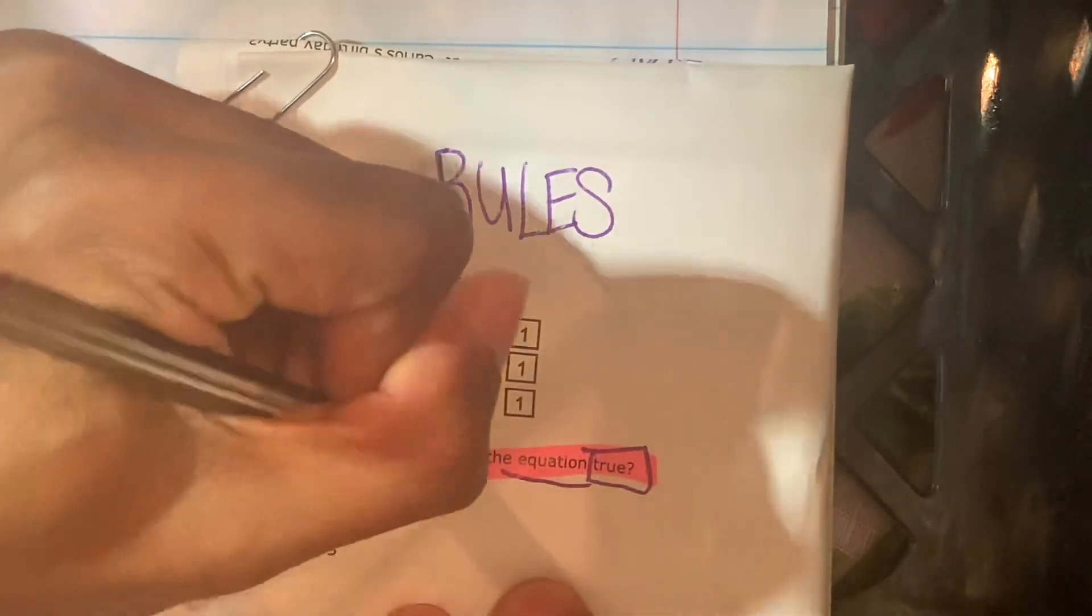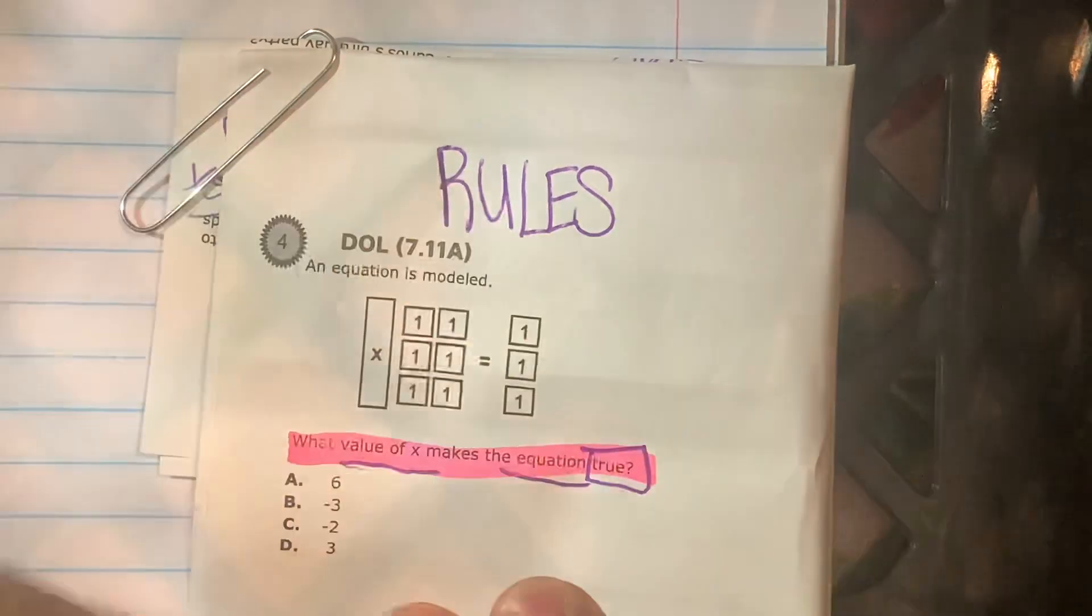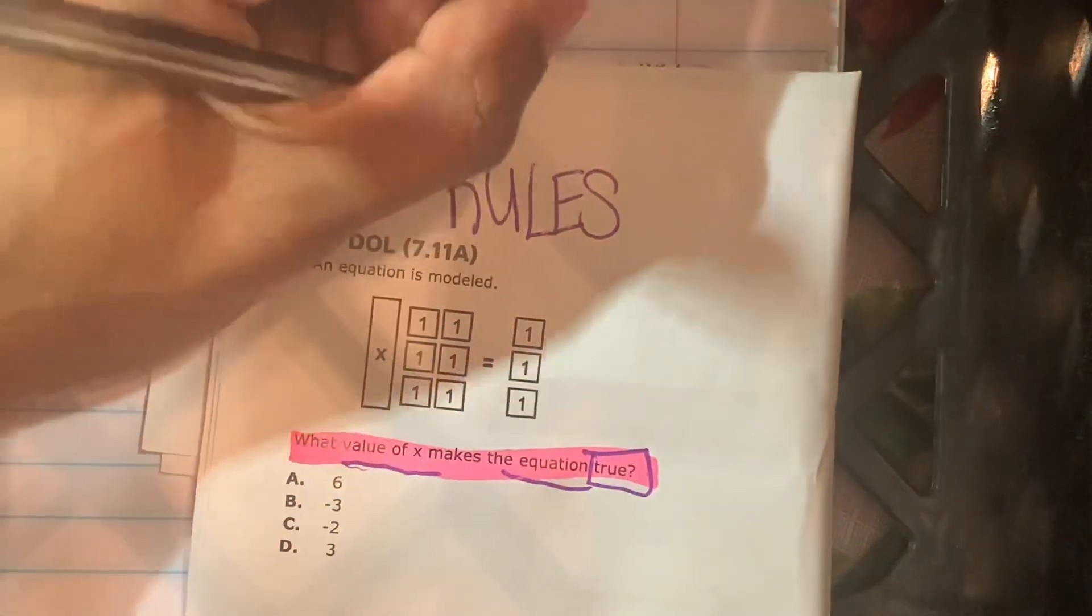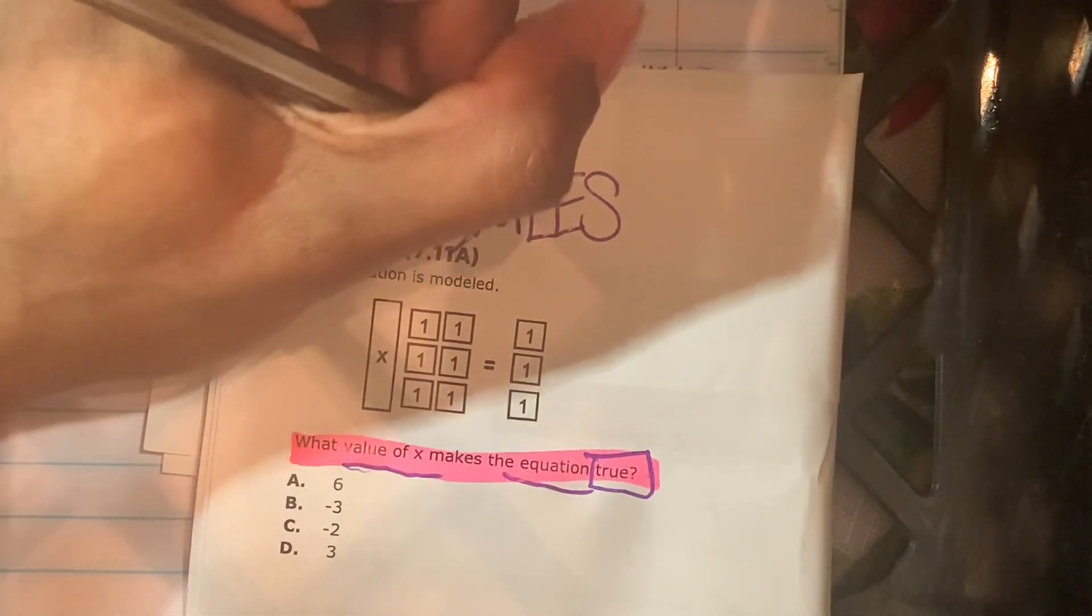So we'll box true, we'll underline the equation. What value of x? So we read the word problem, we underlined and highlight the question, now we're going to label.